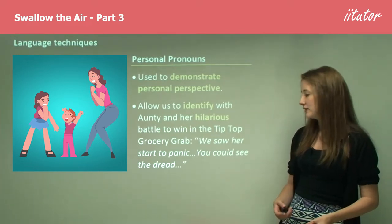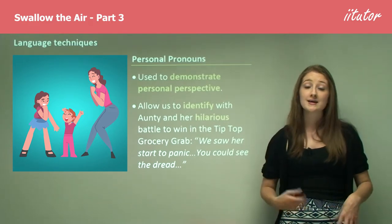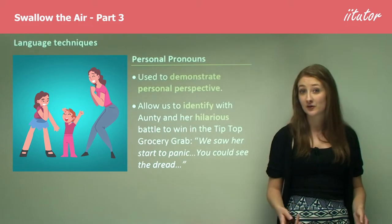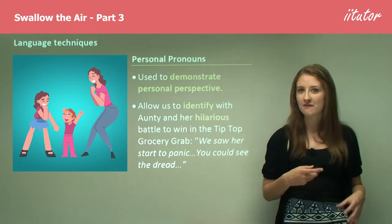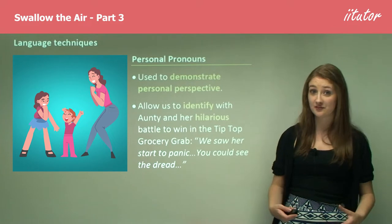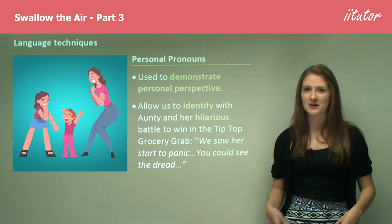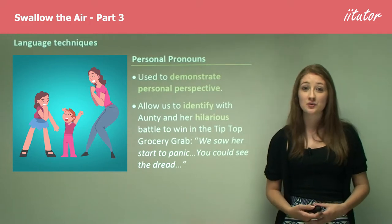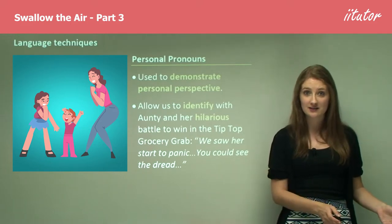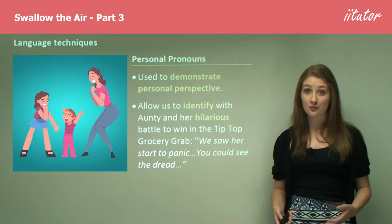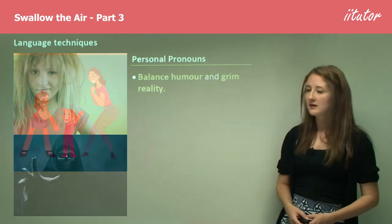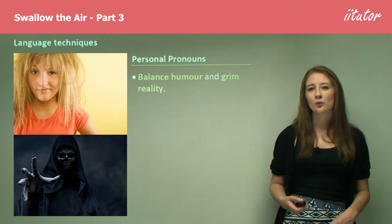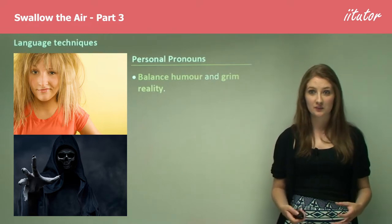In the quote, 'We saw her start to panic, you could see the dread,' the pronouns 'we' and 'you' are really ways of being very inclusive, drawing the audience in and making them feel like they're part of this funny, action-packed scene where the auntie is doing ridiculous running around and grabbing groceries. This creates a contrast from that poetic style through colloquial tone, and is also a way of balancing humour with the grim reality the author is dealing with.